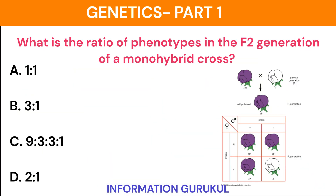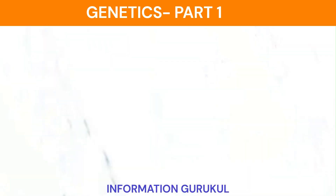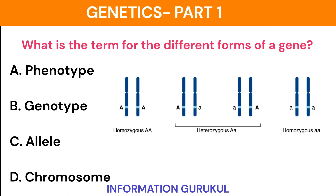What is the ratio of phenotypes in the F2 generation of a monohybrid cross? 3 is to 1. What is the term for the different forms of a gene? Allele.